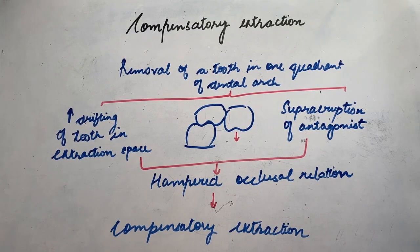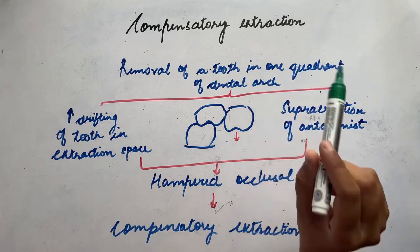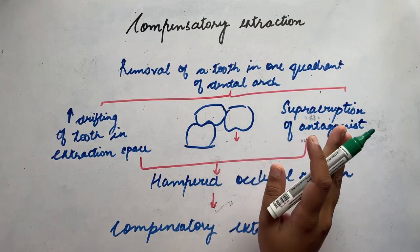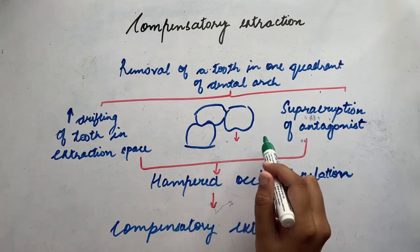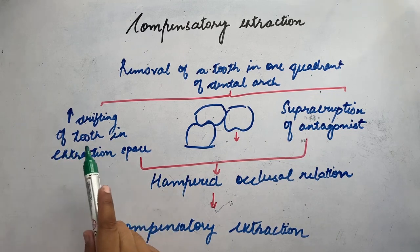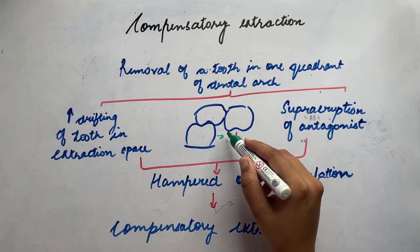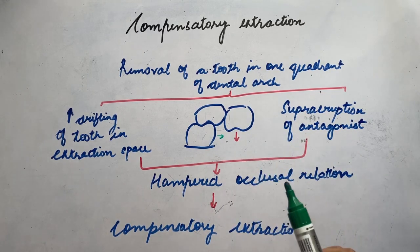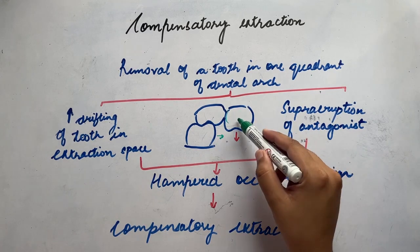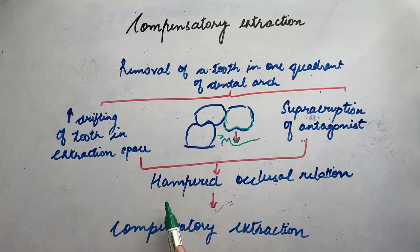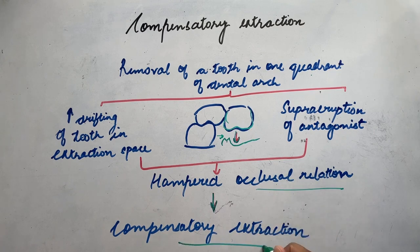Next is compensatory extraction. If we remove a tooth in one quadrant — for example, we have extracted a second molar — two things happen: first, there is increased drifting of adjacent teeth into the extraction space, and second, there is supra-eruption of the antagonist tooth. So if we are extracting the mandibular third molar, the maxillary third molar will supra-erupt into the extraction space, causing hampered occlusal relationships. Hence, compensatory extractions are needed.